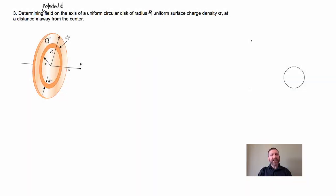What we're going to do now is determine the electric potential and the electric field on the axis of a uniform circular disk of radius capital R, given that it's got uniform surface charge density sigma all over its surface, and we want to find this a distance x away from the center.